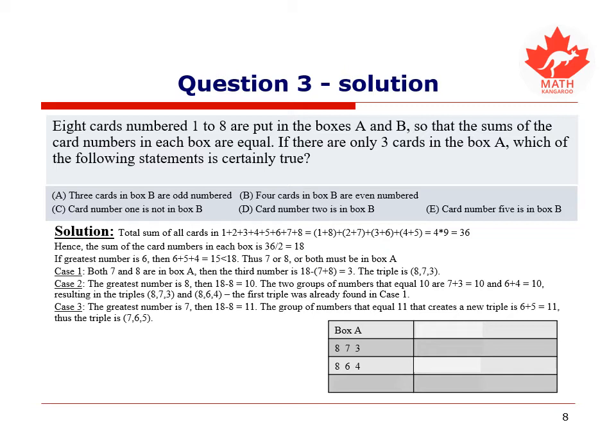Case 3. The greatest number is 7. Then, the sum of the other two numbers is 18 minus 7, which equals 11. Given the restrictions, the only possibility that generates a new triple is 6 plus 5, which equals 11. Thus, our last triple is 7, 6, 5.